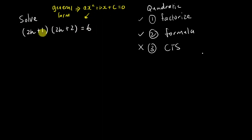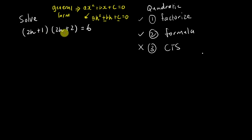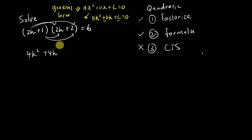You might think we don't have any x here — how do I put it in general form? In this case the general form is ah² + bh + c = 0, where a, b, c are just constant numbers. So the first thing I'll do is expand the equation. Two h multiplied by two h gives me 4h², two h multiplied by 2 gives 4h, one multiplied by two h gives 2h, and one multiplied by 2 gives plus 2. There's also a 6 on the right side.